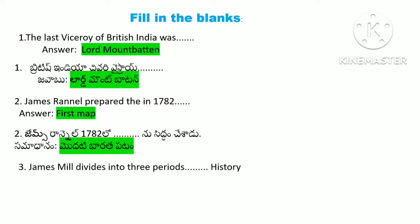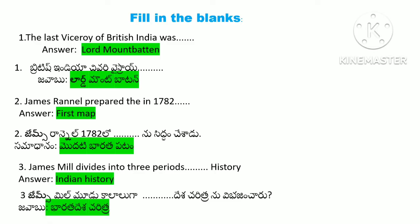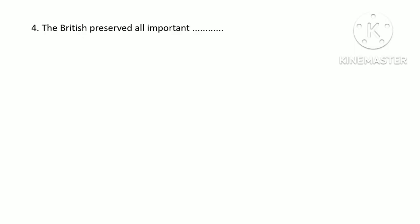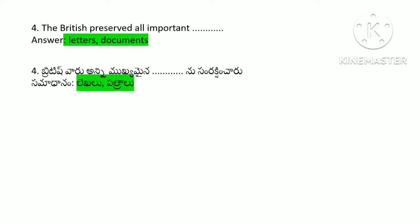James Mill divided Indian history into three periods. The British preserved all important letters and documents.